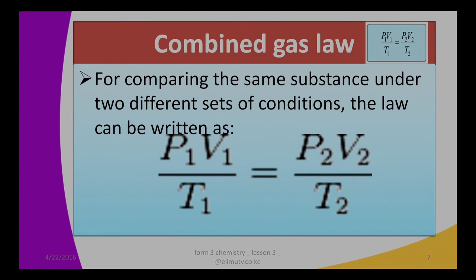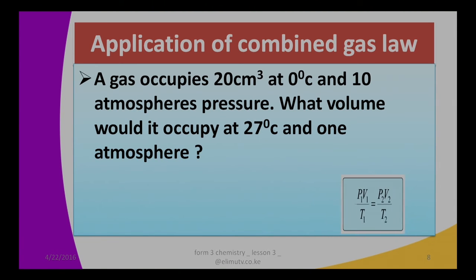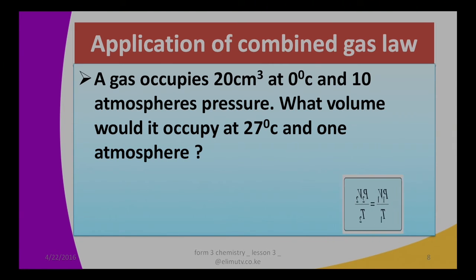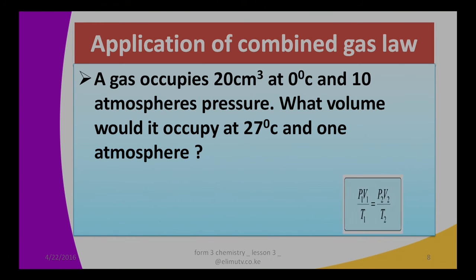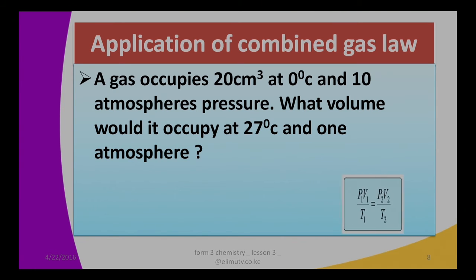Now let's look at the application of Combined Gas Law in calculations. A gas occupies 20 centimeters cubed. What volume will it occupy at 27 degrees Celsius and one atmosphere? This problem requires the application of Combined Gas Law. That 20 centimeters cubed is the first volume V1 at zero degrees Celsius. Zero degrees is our temperature T1 and 10 atm is our P1. The volume V2 is what we need to find, at 27 degrees Celsius which is T2, and one atmosphere which is P2.